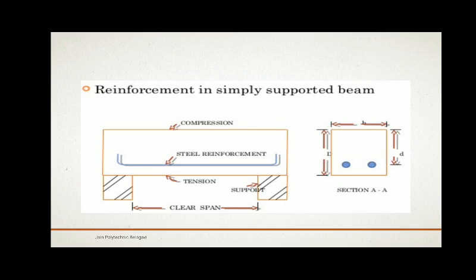Here you can see the arrangement of reinforcement in a simply supported beam. This is a longitudinal section and this is a cross-section, that is section at A-A. You can see how the bars are bent at the end, where both the tensile and compressive forces are acting.